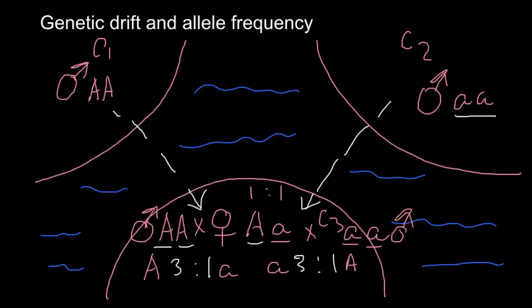The bigger the community, the less effect a small genetic drift will have. That is why on islands you can sometimes see completely different allele frequencies from the source communities — because the initial migrants may have had allele frequencies different from the normal proportions in the original community, just due to random factors.